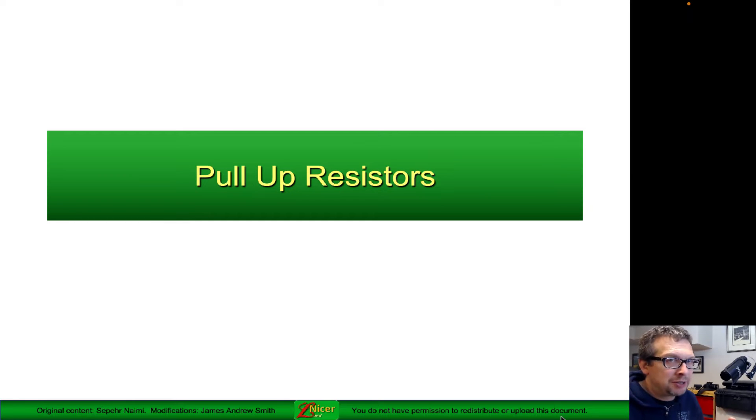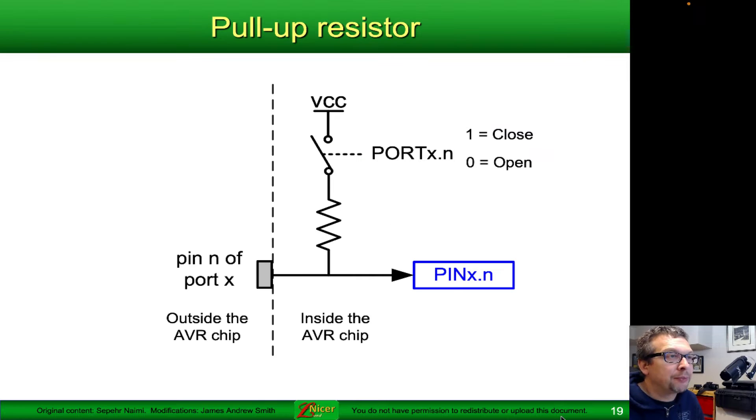Often you'll see them on the outside of your processor as discrete components. However, it's entirely possible to use the internal pull-up resistors that are found inside of the AVR as well as other microprocessors.